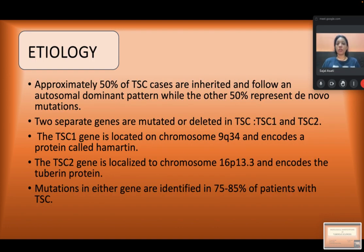Regarding the etiology of tuberous sclerosis, 50% of cases are inherited and follow an autosomal dominant pattern while the other 50% are de novo mutations. Two separate genes are mutated or deleted: TSC1 and TSC2. TSC1 is located on chromosome 9q34 and encodes the protein hamartin, while TSC2 is localized on chromosome 16p13.3 and encodes tuberin protein. Mutations in either gene are identified in 75 to 85% of cases with TSC.